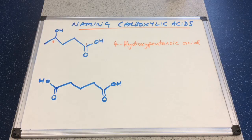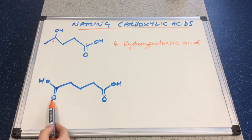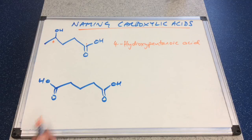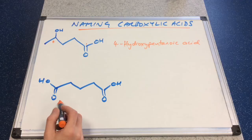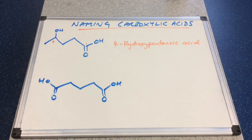The last one — we've got two carboxylic acid groups at either end of the molecule. When you have this situation, this is what we call a dioic acid. 'Di' just means two, so two carboxylic acid groups gives 'dioic'. How many carbons are in the main chain? One, two, three, four, five. So this would be called pentanedioic acid.